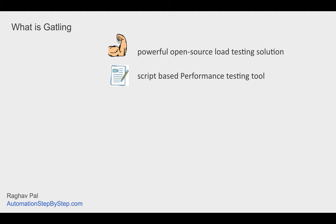Gatling is script-based, so in Gatling we actually create scripts. Do not worry - we do not have to write all the scripts from scratch. There is a Gatling recorder, a GUI using which we can record and generate the scripts, and then we can do some editing if needed. Being script-based makes it very easy to integrate with other processes, systems, or version control systems and CI/CD systems.